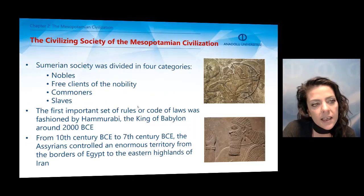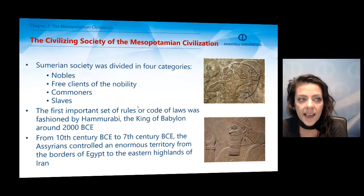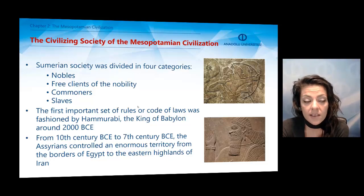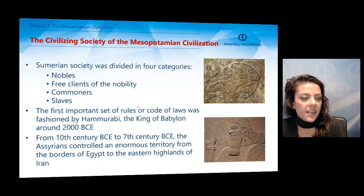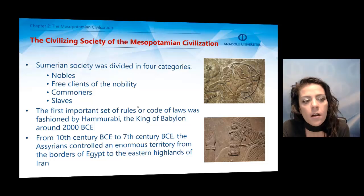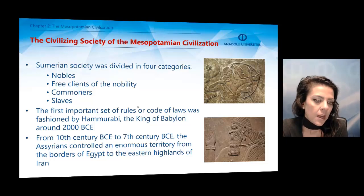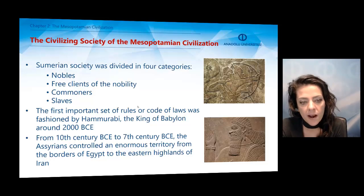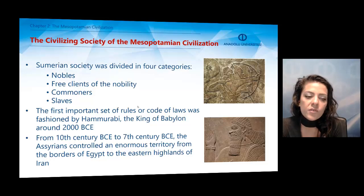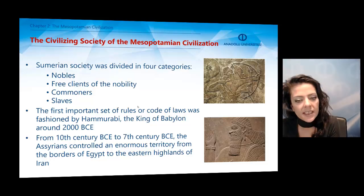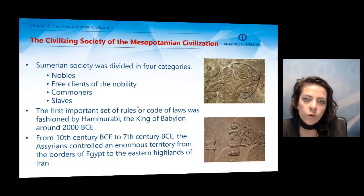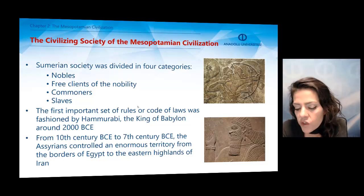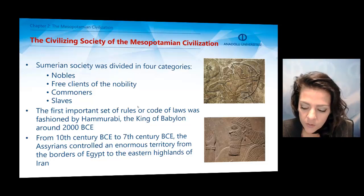The Sumerian society was divided into four main categories: nobles, who were at the top of society; clients of the nobility; commoners; and at the very bottom, slaves. The first important set of rules or code of laws was fashioned by Hammurabi, the king of Babylon, around 2000 BCE. From the 10th century BCE to the 7th century BCE, the Assyrians controlled an enormous territory, from the borders of Egypt to the eastern highlands of Iran, which also contributed to the civilizing society of Mesopotamian civilization.